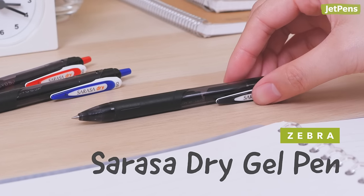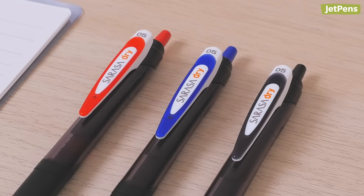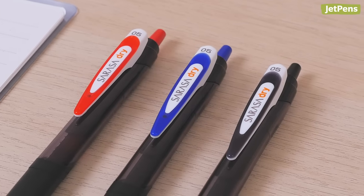Left-handers can consider the Zebra Sarasa Dry Gel Pen. Its fast-drying ink comes in three vivid colors and tip sizes.